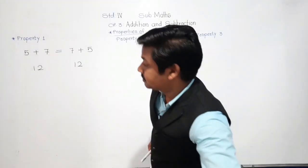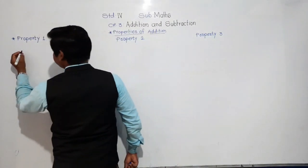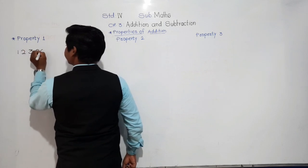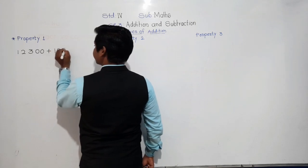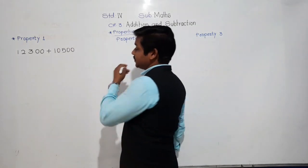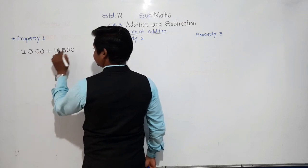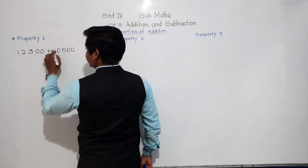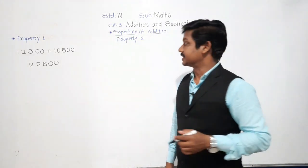Now we will see a 5-digit number example. Suppose the number is 12,300 plus 10,500. What sum do we get? 0 plus 0 is 0, 0 plus 0 is 0, 3 plus 5 is 8, 2 plus 0 is 2, and 1 plus 1 is 2. So we get 22,800.